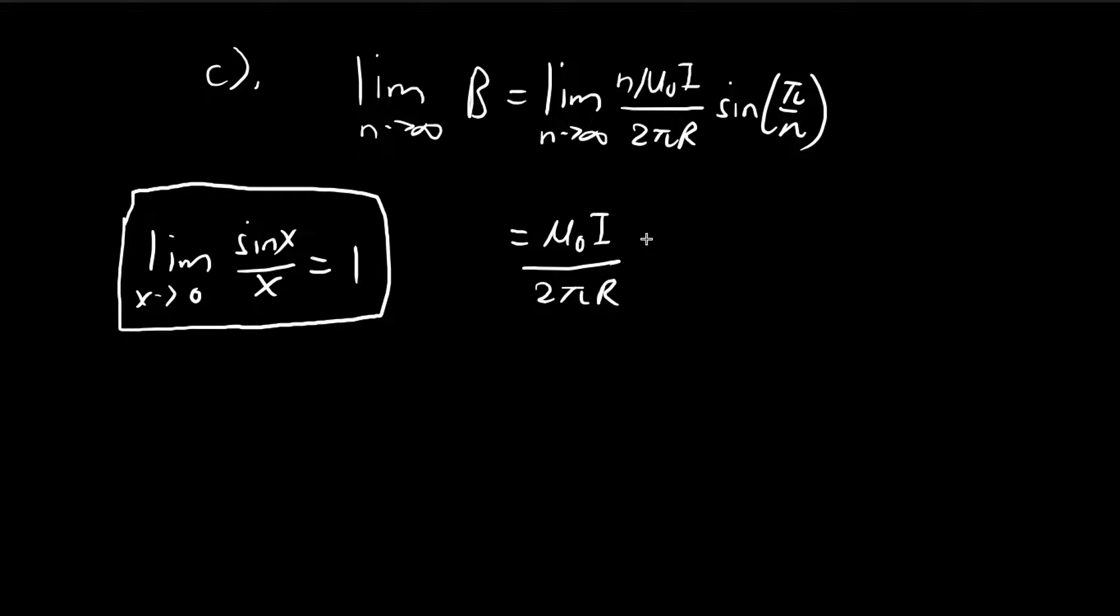We're evaluating this limit. Instead of n, I'm going to use m, where m is defined as 1 over n. So when n tends to infinity, m is going to tend to 0. This becomes mπ, and the n up here becomes this. In order to use this result, I'm going to multiply π to the denominator and multiply π over here.